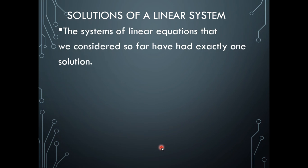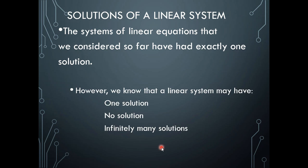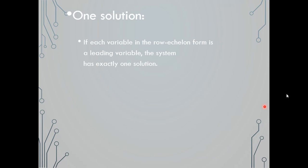We have seen systems of linear equations that had only one solution. However, a linear system may have one solution, no solutions, or infinitely many solutions. For the one solution scenario, if each variable in row echelon form is a leading variable, the system has exactly one solution. Everything we've done so far has used either a 3x3 or 2x2 matrix with Gauss-Jordan or regular Gaussian elimination.